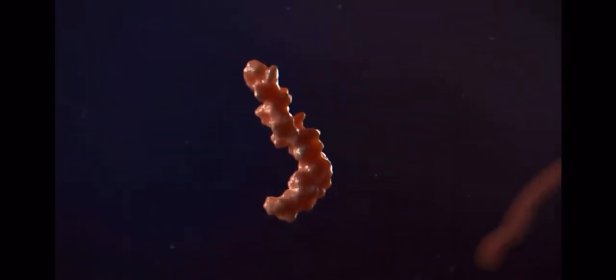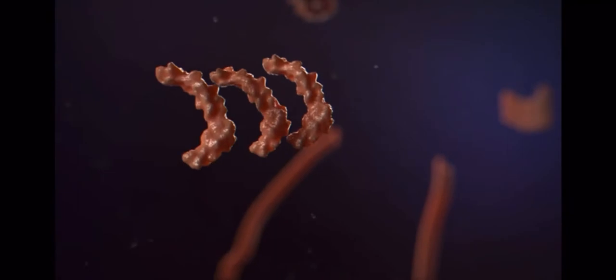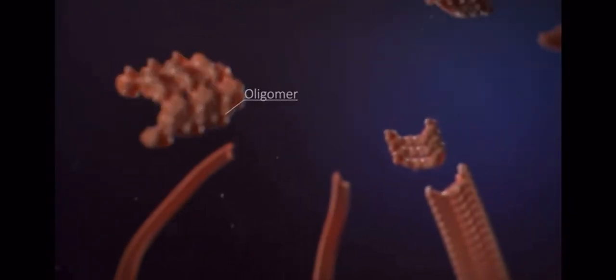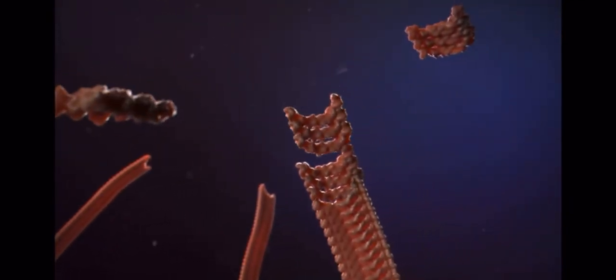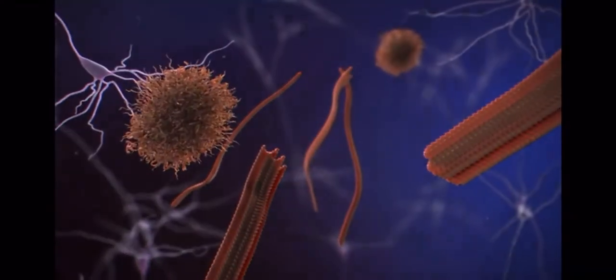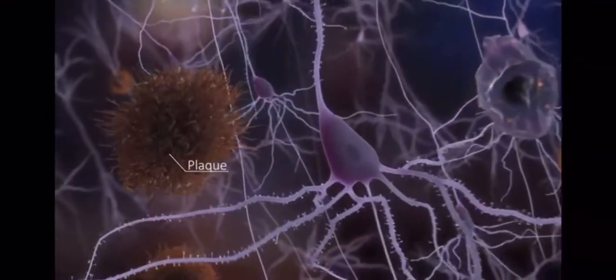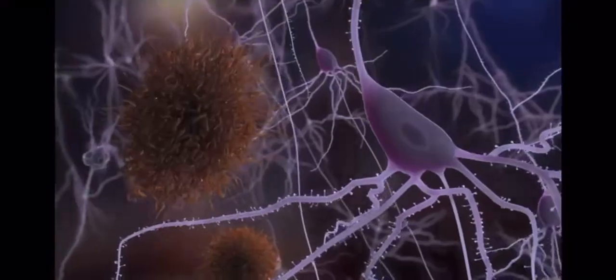Amyloid beta is cleaved off by enzymes beta and gamma secretase. Amyloid beta misfolds and forms oligomers that combine into insoluble fibrils called plaques. Amyloid beta triggers neuronal death but is mediated by another protein.